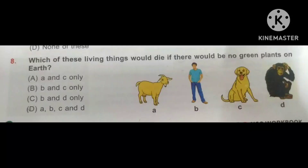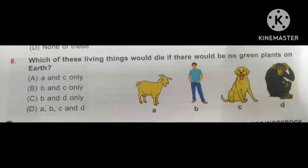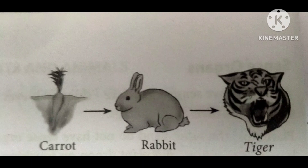Question number 8. Which of these living things would die if there were no green plants on earth? Option A is a goat, B is a man, C is a dog, and D is a chimpanzee. The correct option is D — All of the above: A, B, C, D. Because as we see in the food chain, all food chains start with plants. So if there were no green plants on earth, all living things would die.